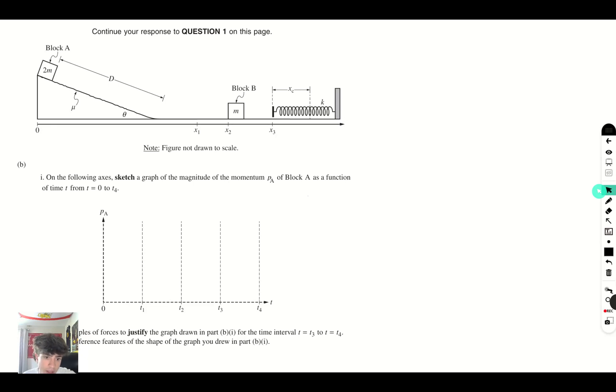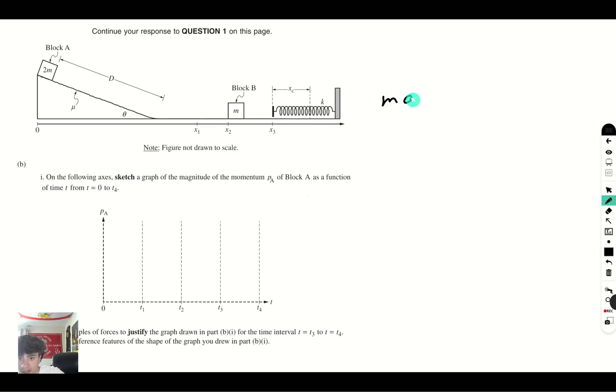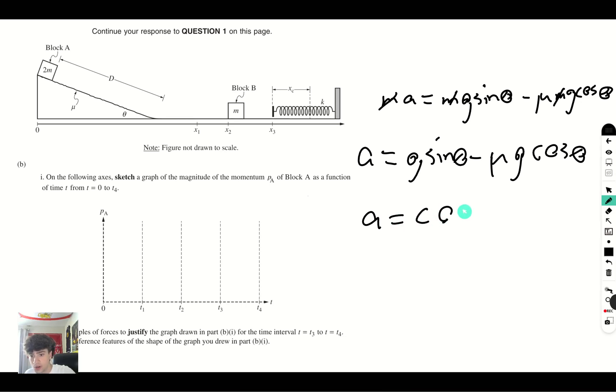Here we go, part B. We know that as the block is sliding down, if we write out our net force equation, it's going to be ma equals mg sine theta minus mu mg cosine theta. And factor out the m's. I know that the m's are all 2m's, but that doesn't really matter. We see that our acceleration is equal to g sine theta minus mu g cosine theta. And from here, we can observe that our acceleration is a constant, because since all of these terms are constant, our acceleration is going to be a constant value. And since our acceleration is a constant value, that means that our velocity is changing at a constant rate.